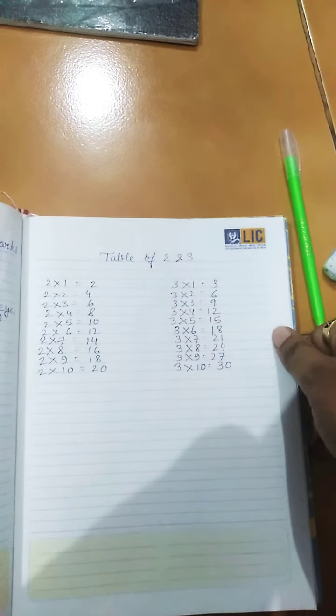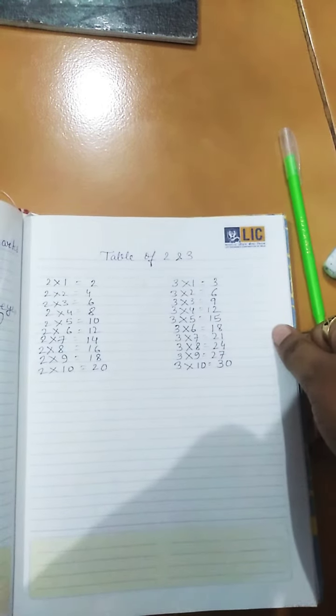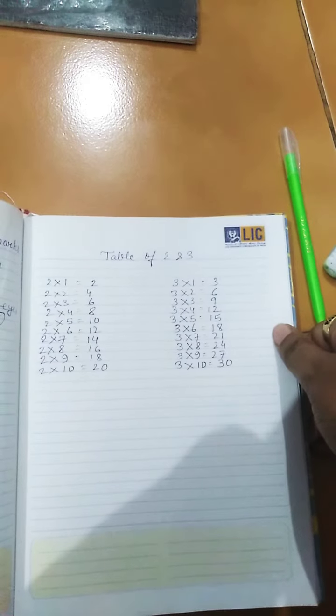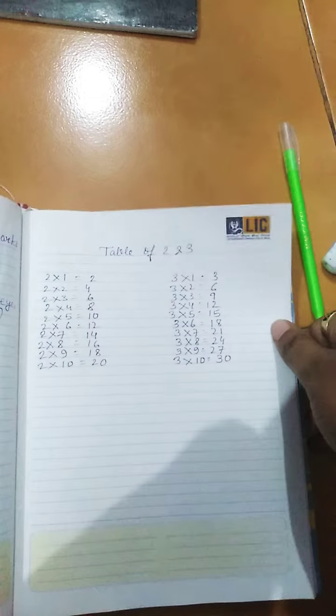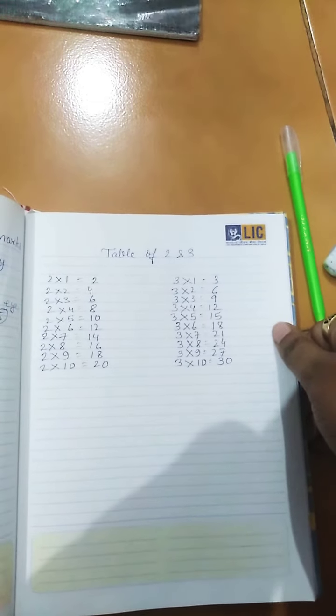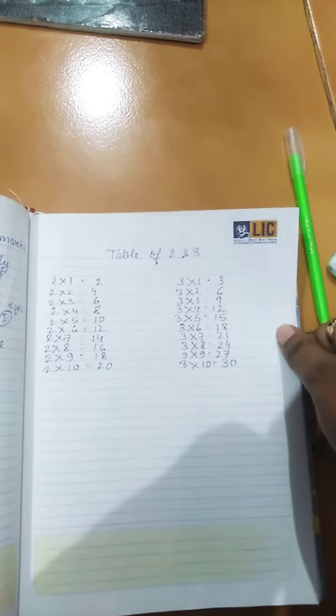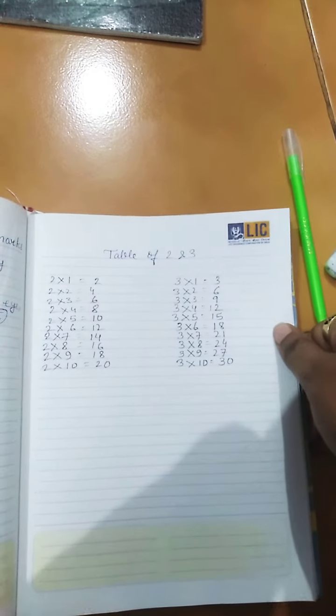Now table of 3: 3×1=3, 3×2=6, 3×3=9, 3×4=12, 3×5=15, 3×6=18, 3×7=21, 3×8=24, 3×9=27, 3×10=30. This is the table of 2 and 3.